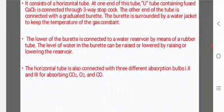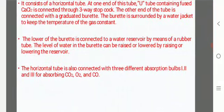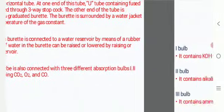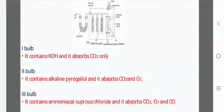The lower end of the burette is connected to a water reservoir by means of a rubber tube. The level of water in the burette can be raised or lowered by raising or lowering the reservoir. The horizontal tube is also connected with three different absorption bulbs I, II and III for absorbing CO2, O2 and CO.